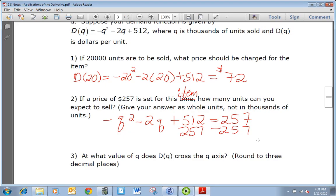Since it's a quadratic function, you get -q² - 2q + 255 = 0.